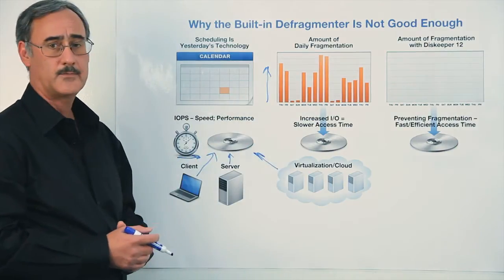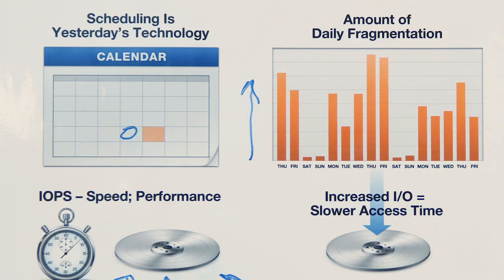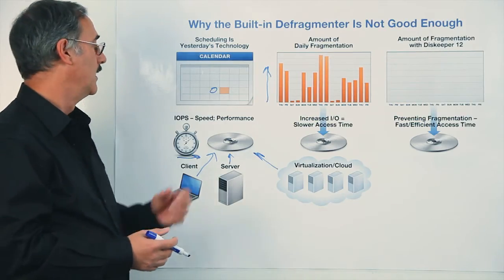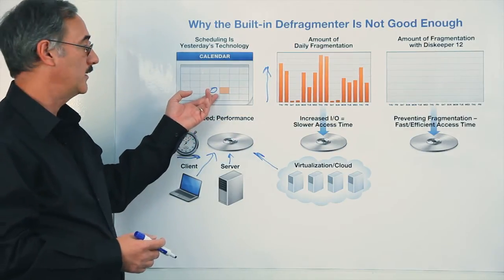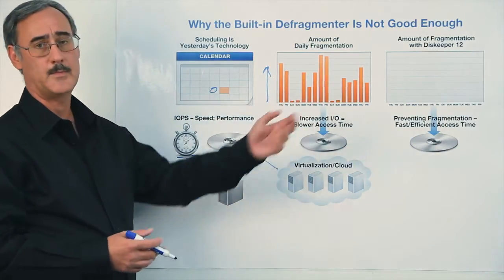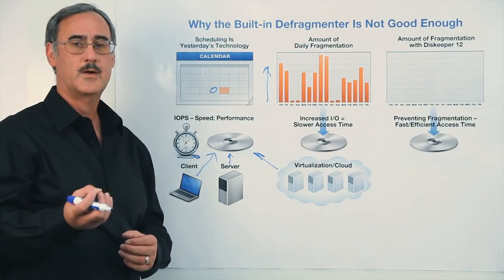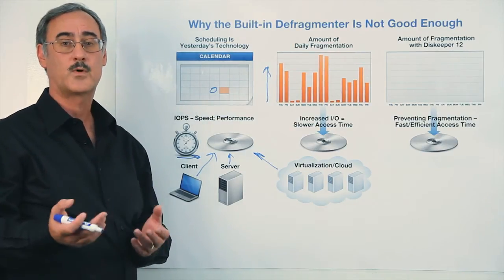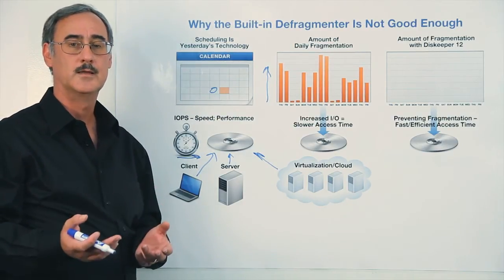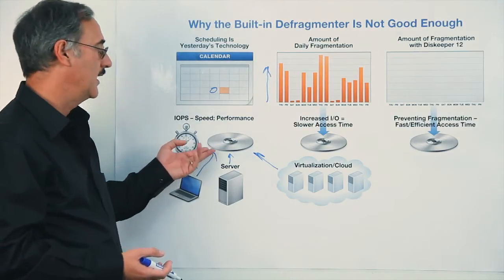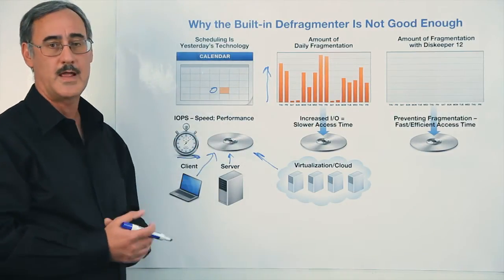Now, the built-in defragmenter, at best, comes along once a week, usually on a Wednesday at one o'clock in the morning. So if your computer system happens to be turned on, the Windows built-in defrag utility will come along and try to clean up the fragmentation. But you've already experienced a performance loss or a performance penalty, because that fragmentation did incur more I.O.s and it took longer to access the data.